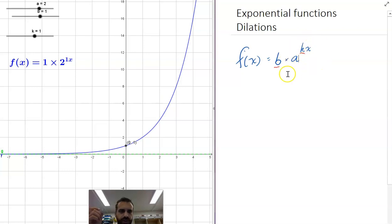If you take a whole function, say a to the kx, and multiply it by something, what happens? Let's take a look.